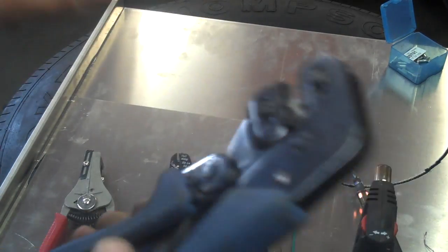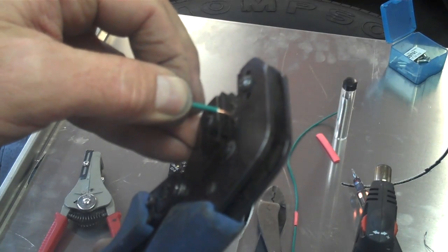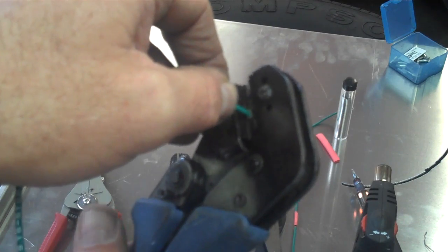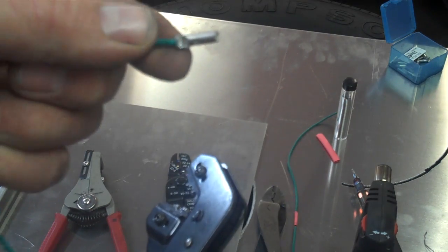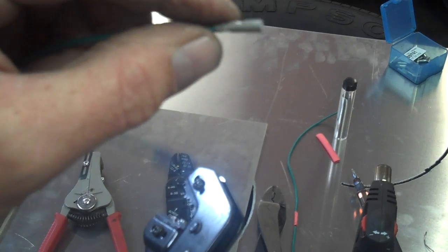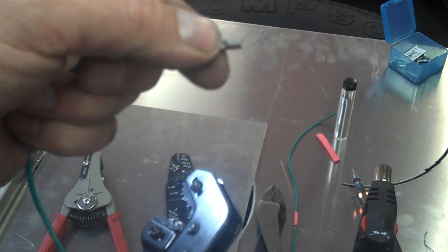Then insert the wire into the terminal. Crimp it. It gives an extremely durable crimp that's really tight. It gives it almost a nice machine finish.